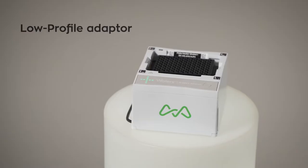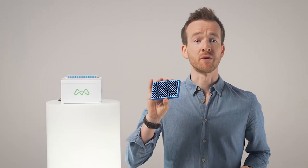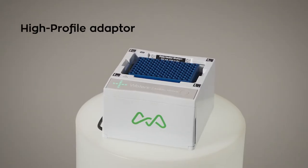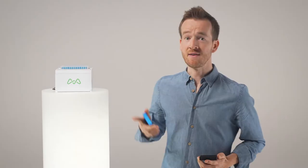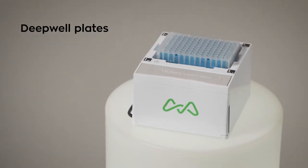There are three adapters to choose from. The low profile adapter for directly holding standard PCR type plates. The high profile adapter for holding higher sitting plates, like those that use interchangeable strips within a frame. And deep well plates, with working volumes going all the way up to 1.3 milliliters.